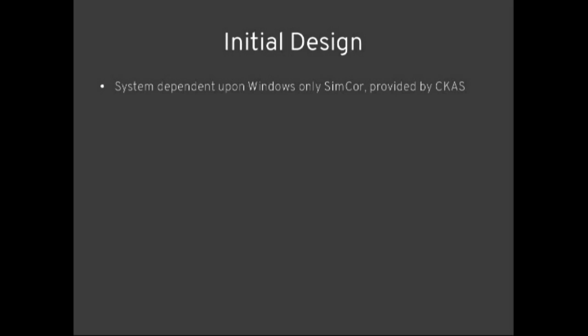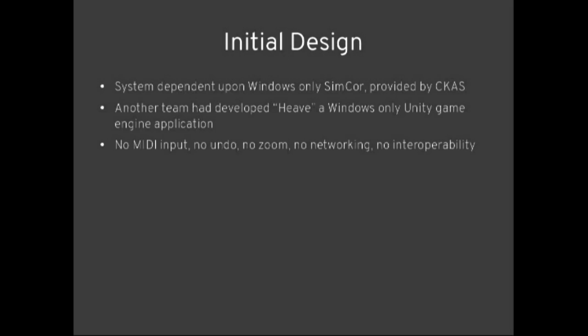When I started, CCAS — the company that makes the 6DOF — has a program called SimCorp, and it's the only way to communicate to the 6DOF. Six degrees of freedom: X, Y, Z, Pitch, Roll, and Yaw. So there's this Windows-only program that does all the communication. Another team had built an application called Heave in the Unity Game Engine to work with that, but it had no interoperability — you couldn't undo, couldn't zoom, couldn't network with it, couldn't send it MIDI packets. It was just one of these painstaking line-drawing operations. They'd reinvented the DAW, basically, and all the things you like about using a DAW were not there.